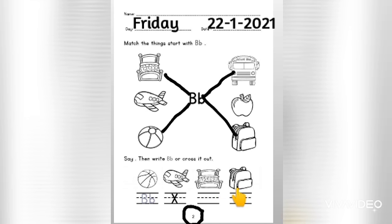How about the last one? What is this? This is a picture of back. B, bah, back. Now you need to write the letter B, capital letter B and small letter B over here.